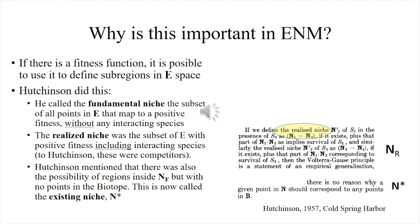I am going to discuss this idea of the fitness function in great detail in another talk. But right now, what I am going to use this for is to tell you that you can use this fitness function to subdivide niche space into regions. These regions are the ones that Hutchinson subdivided in that famous paper of 1957, the Cold Spring Harbor Symposium on Quantitative Biology. There are two regions that Hutchinson defined explicitly, and another one that he just mentioned in passing in one line.